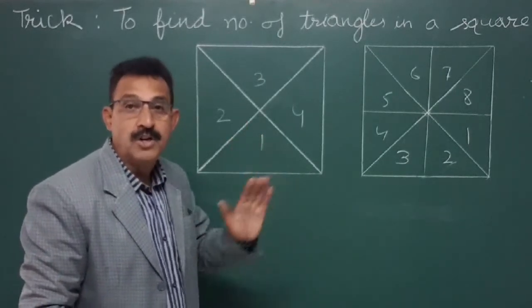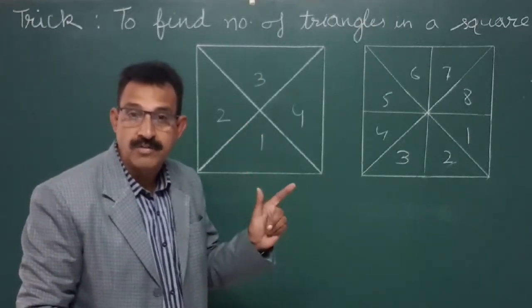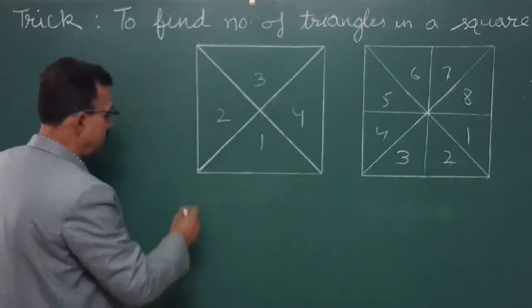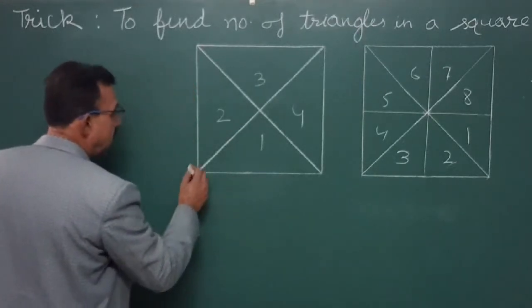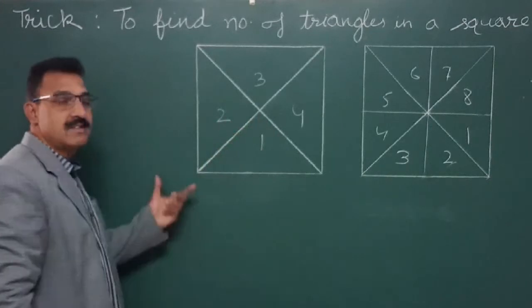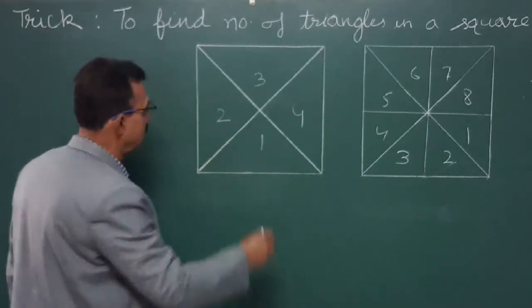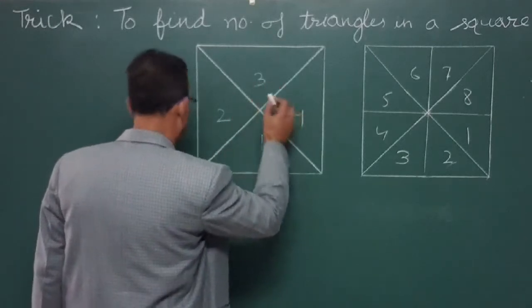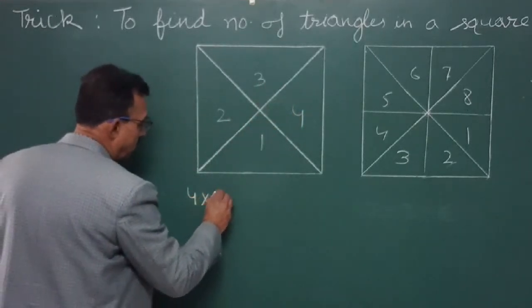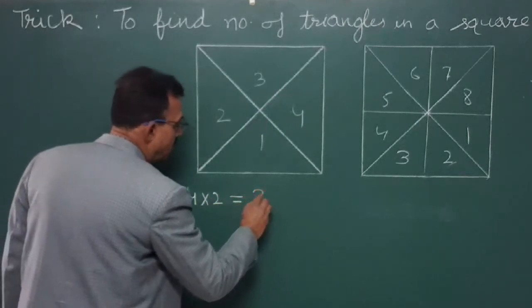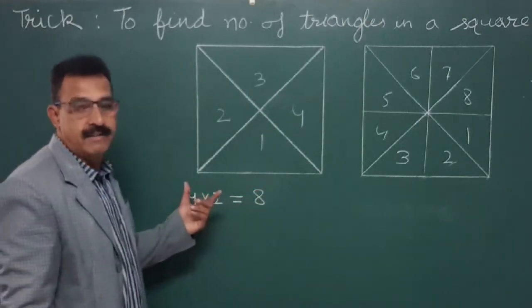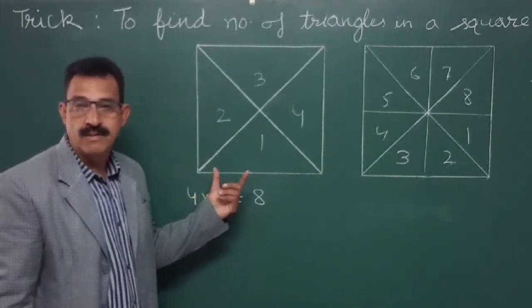We need not waste our time. We have got a trick. So one, two, three, four - four triangles are visible, into two. So in total there are eight triangles in the figure.